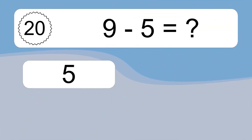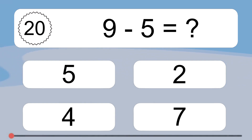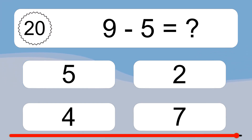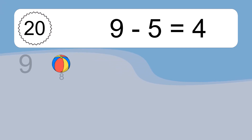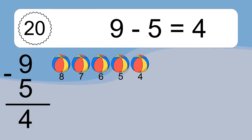9 minus 5 equals what? 9 minus 5 equals 4. Let's count it: 8, 7, 6, 5, 4.